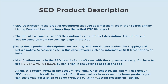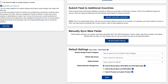Many times product descriptions are too long and contain information like shipping and return policy, accessories, etc. In this case, keyword-rich and informative SEO descriptions do help. Modifications made in the SEO description don't sync with the app automatically — you have to use the re-sync meta fields button given in the settings page of the app.